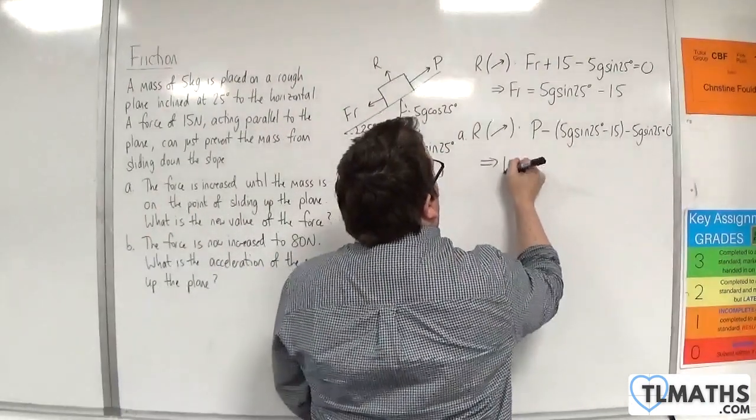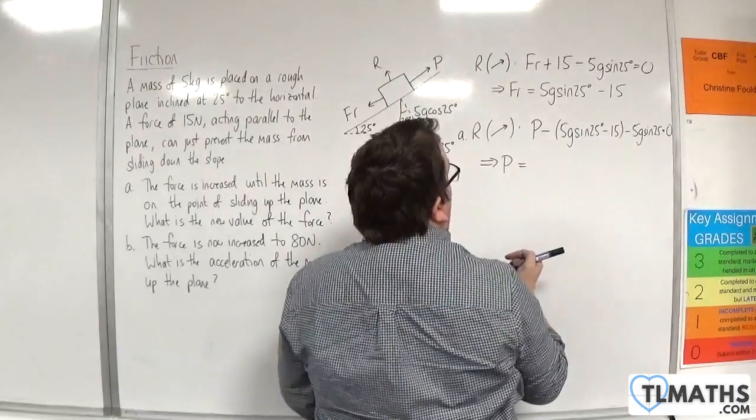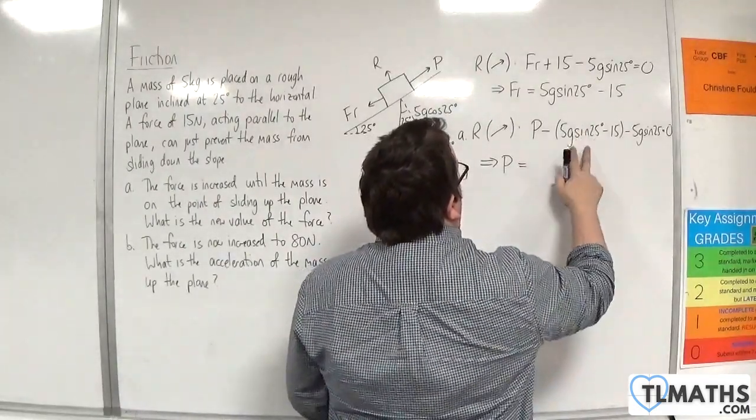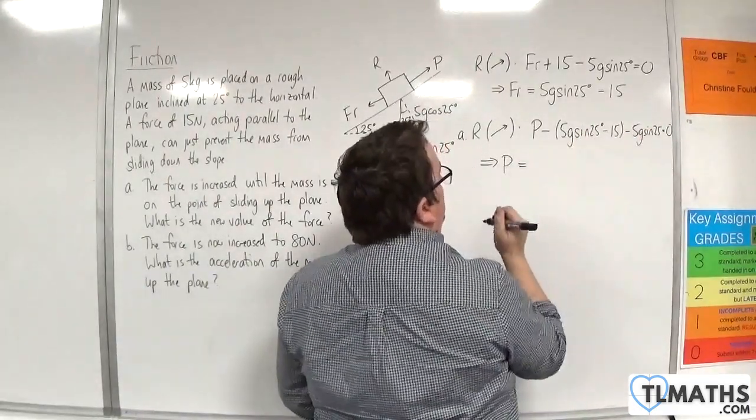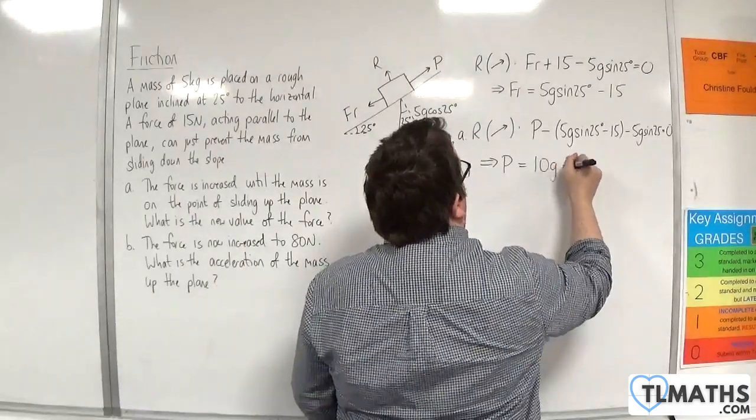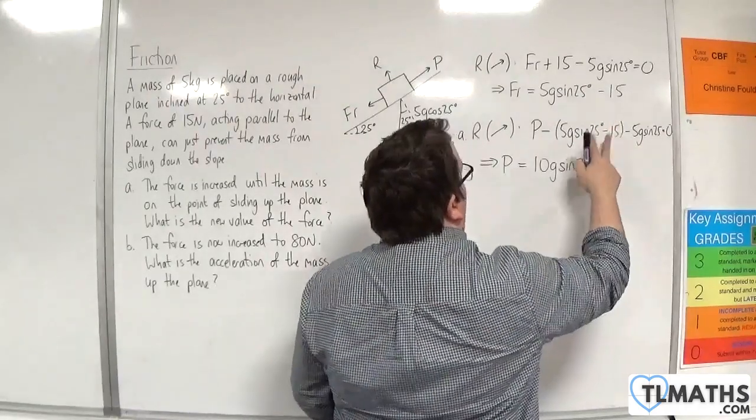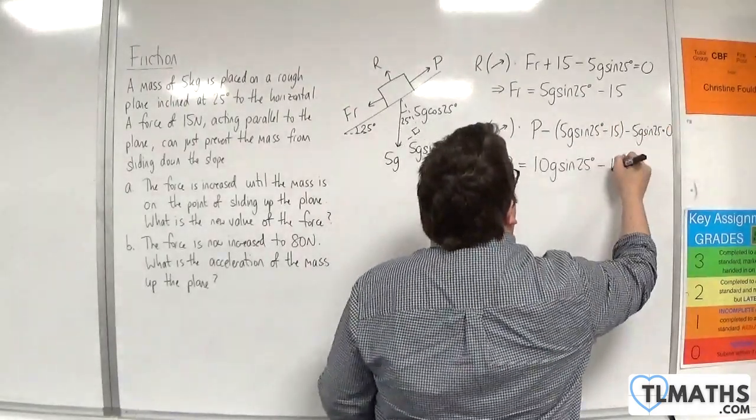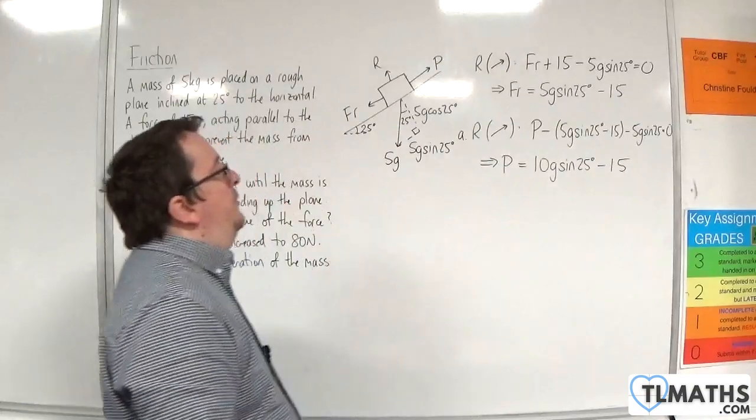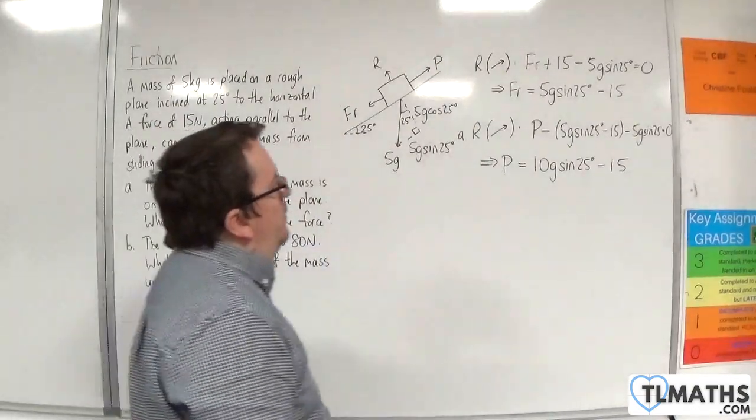So that implies that P is going to be 5g sin of 25 plus 5g sin of 25, so 10g sin of 25 degrees. And we've got take away minus 15, so it's plus 15 over here, take 15 when it moves over to the other side. So this is my force P.